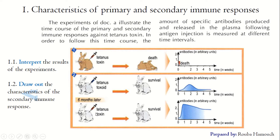So what are the characteristics of the secondary immune response observed in experiment two? The secondary immune response is more rapid, more intense or amplified, and more persistent or durable.